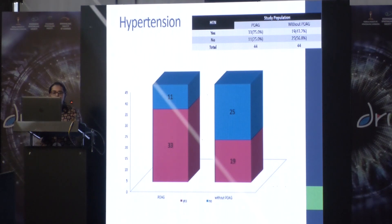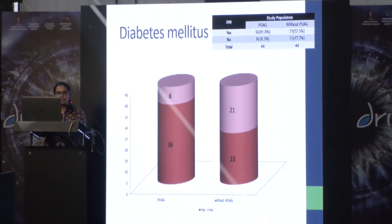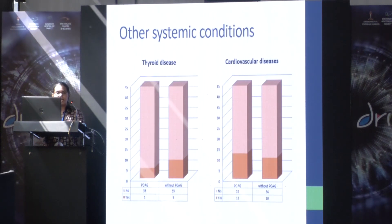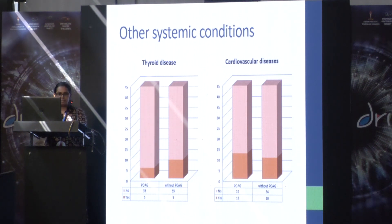Systemic associations with primary open angle glaucoma were also evaluated. It was shown that hypertension and diabetes mellitus were significantly associated with primary open angle glaucoma. Other systemic conditions such as thyroid disease and cardiovascular diseases were not significantly associated with primary open angle glaucoma in this study.